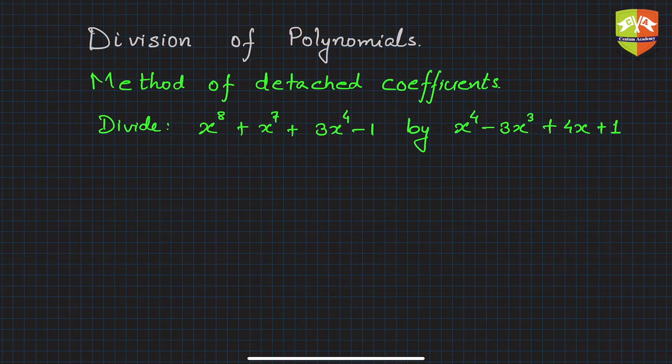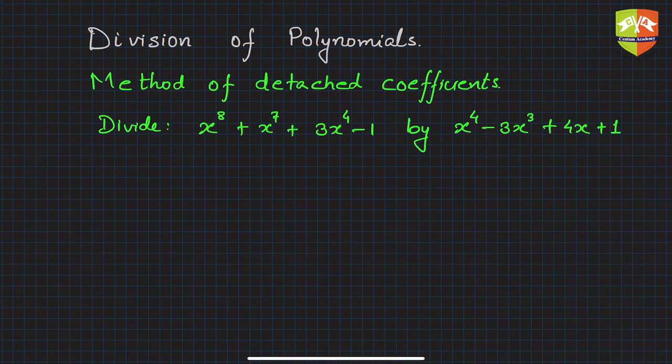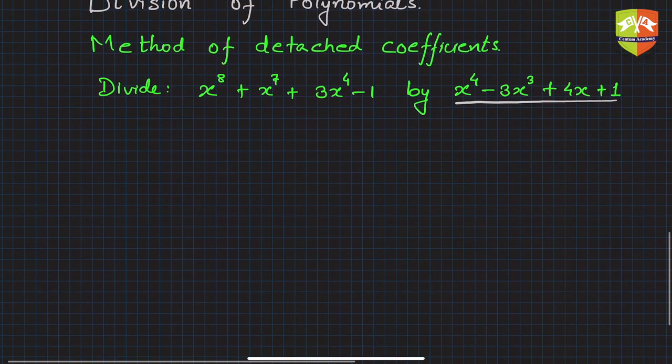Before we begin, just as we did in the multiplication case, we have to make sure the polynomials are complete — that means all powers of the variable are present. Let's take this example: we have to divide x to the power 8 plus x to the power 7 plus 3x to the power 4 minus 1, by x to the power 4 minus 3x cubed plus 4x plus 1. Clearly both are not complete.